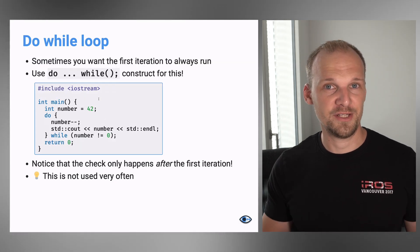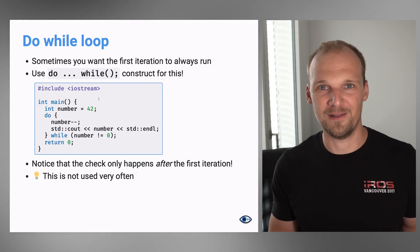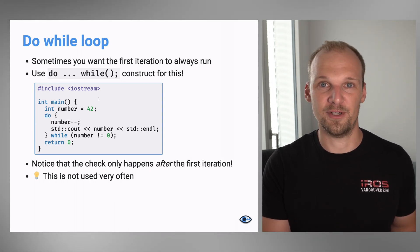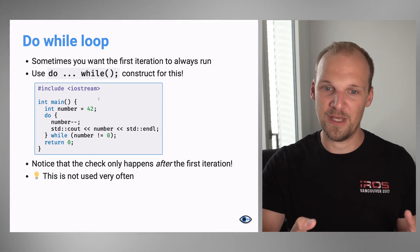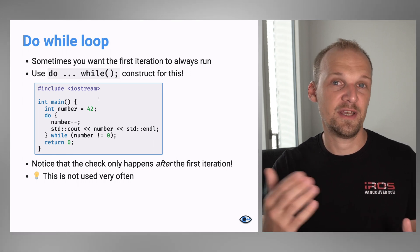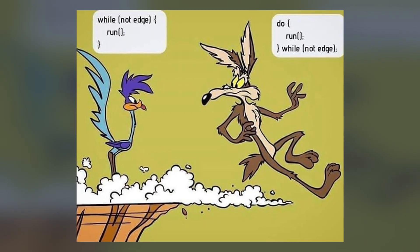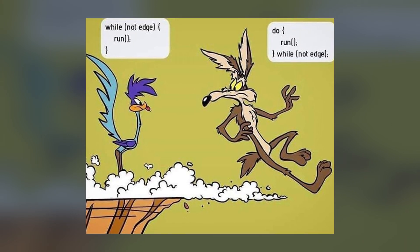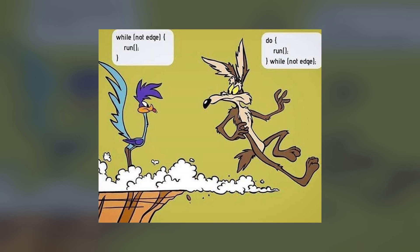There is one more variation: the do-while loop. It starts with the keyword do, then the body, and then a while statement at the end that checks if the condition still holds. This means the first iteration always runs regardless, and only then do we check the condition. To be honest, this is used pretty rarely. At this point it's enough that you know it exists, but most of the time you'll just use the regular while loop.